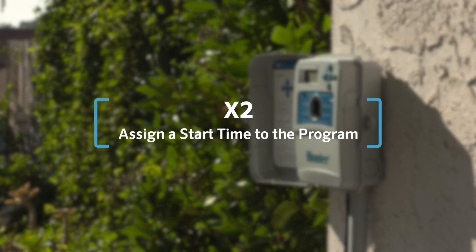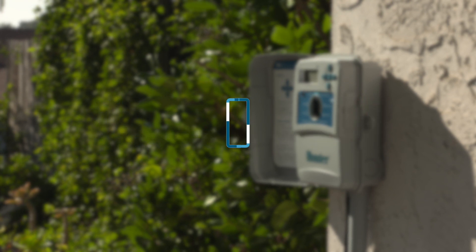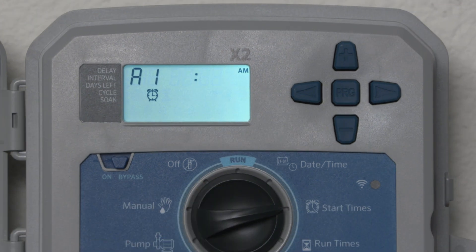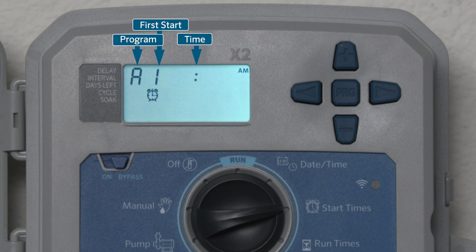How to assign a start time to the program: each program requires three ingredients to be complete — a start time, a run time, and days to water. We'll start by programming the start times. Turn the dial to start times. The display will show the first start time in Program A, which represents the first complete cycle of all stations with a run time in Program A. Use the plus or minus buttons to program the first start time — in our case, 6 a.m.